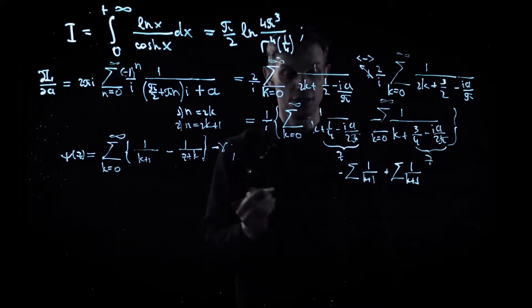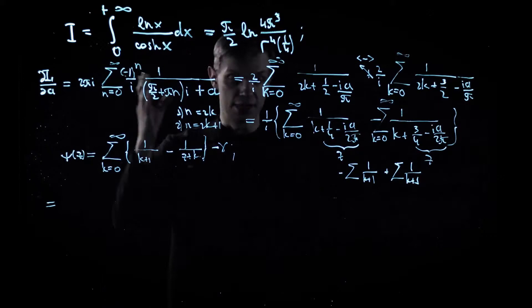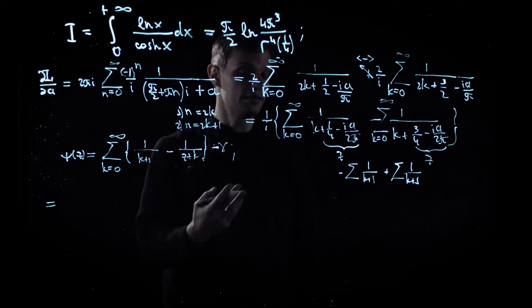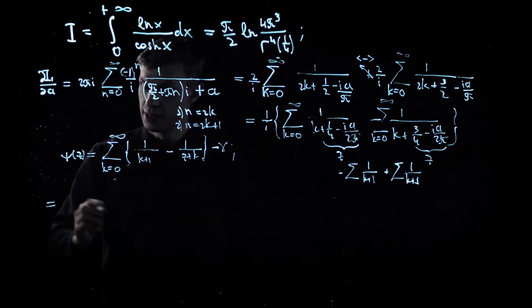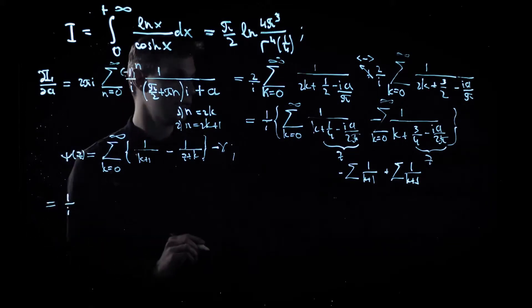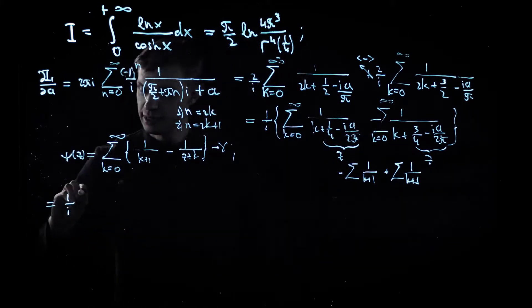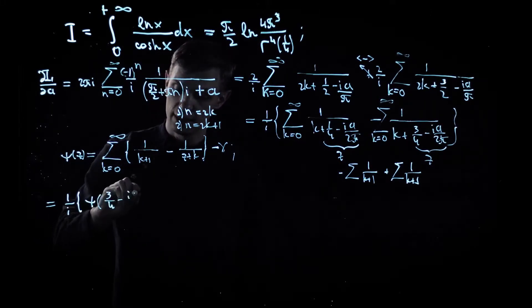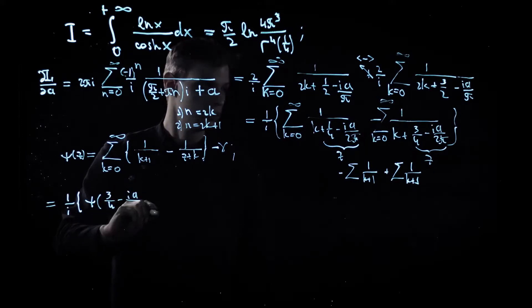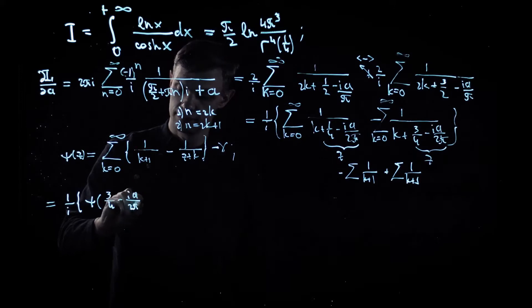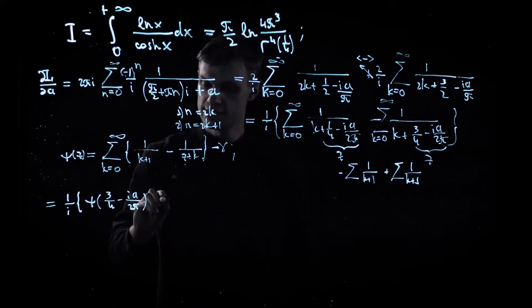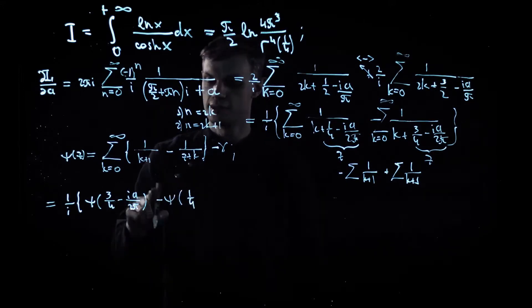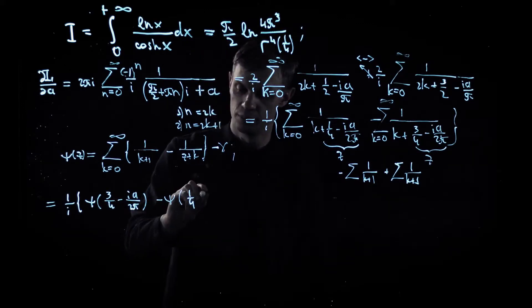And naturally now our integral, or rather the derivative of the integral with respect to a, is reduced to the difference of two digamma functions. The first one is psi of three-fourths minus i a over two pi, and the second one is the same digamma function with three-fourths changing to one-fourth.